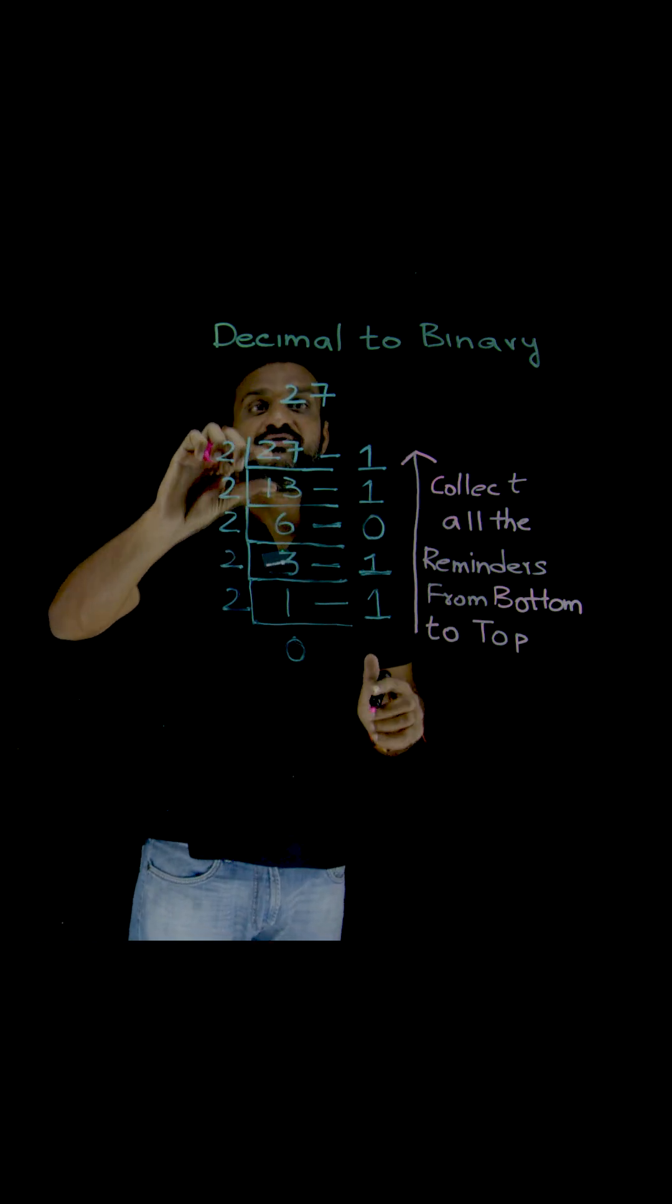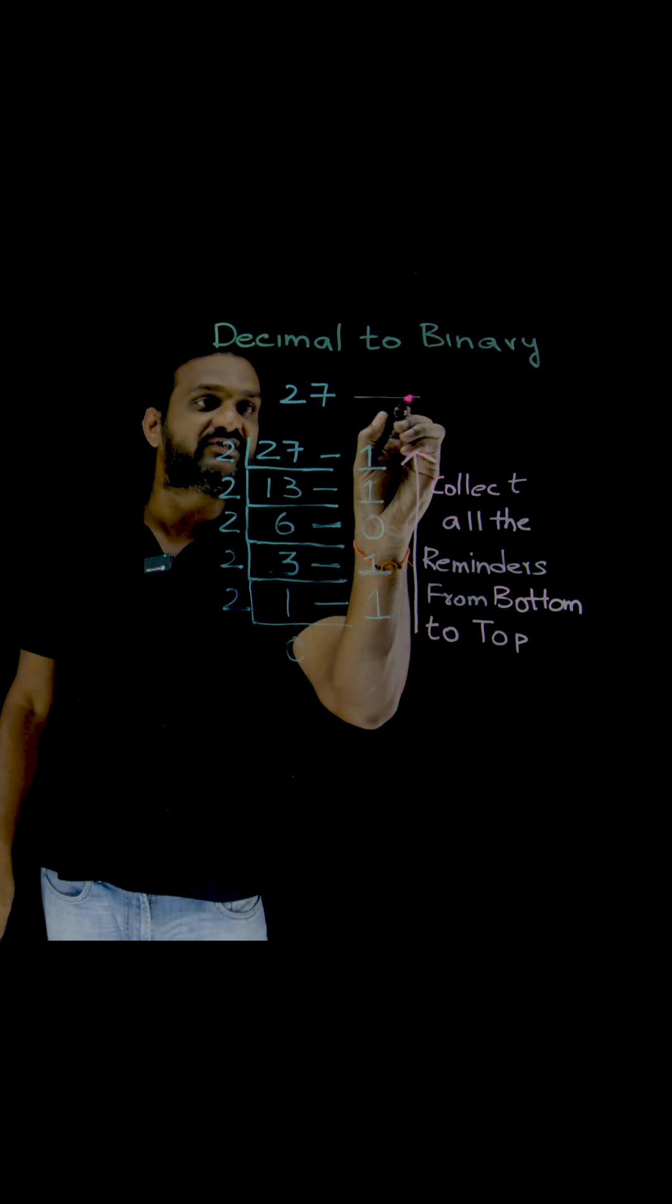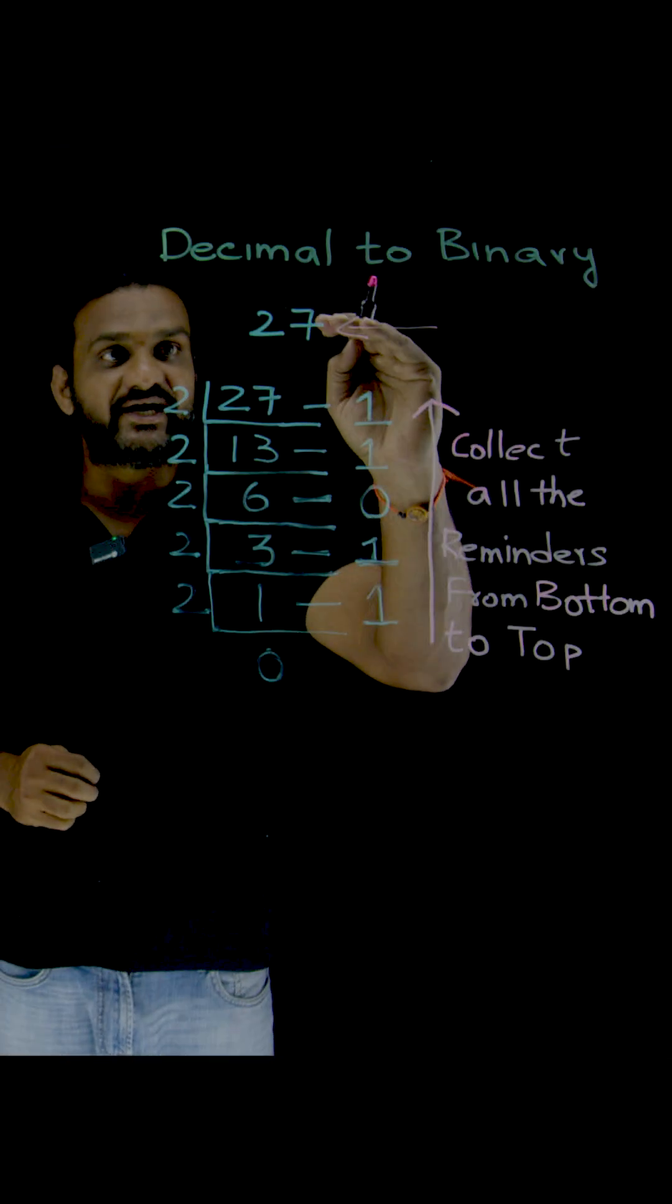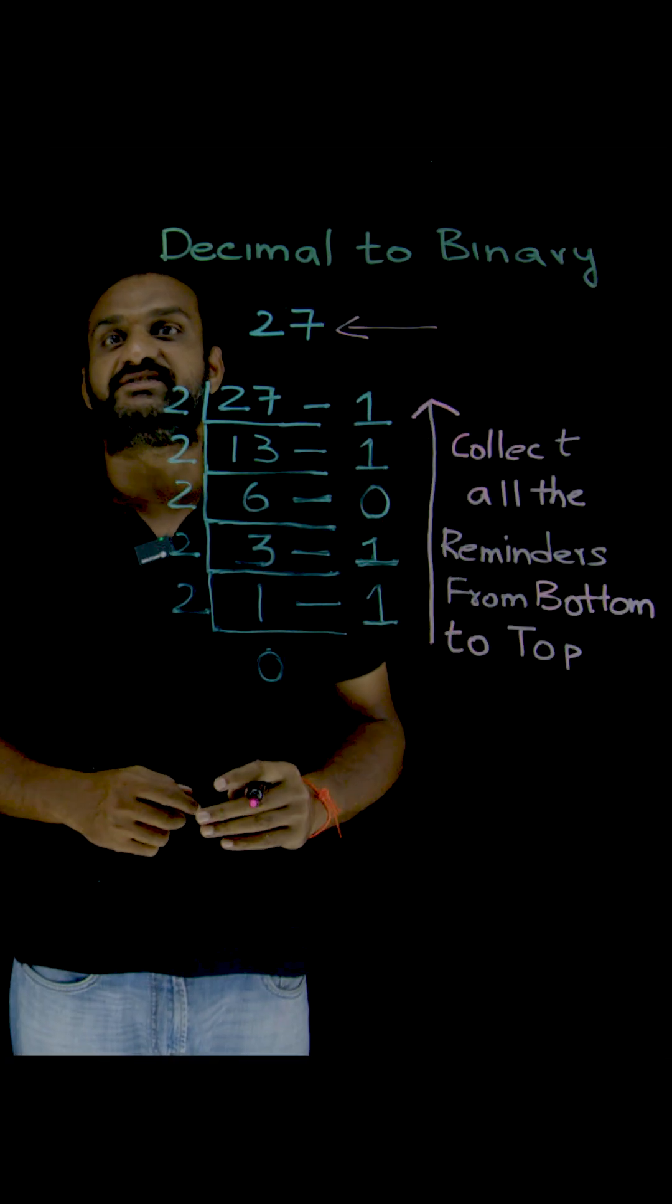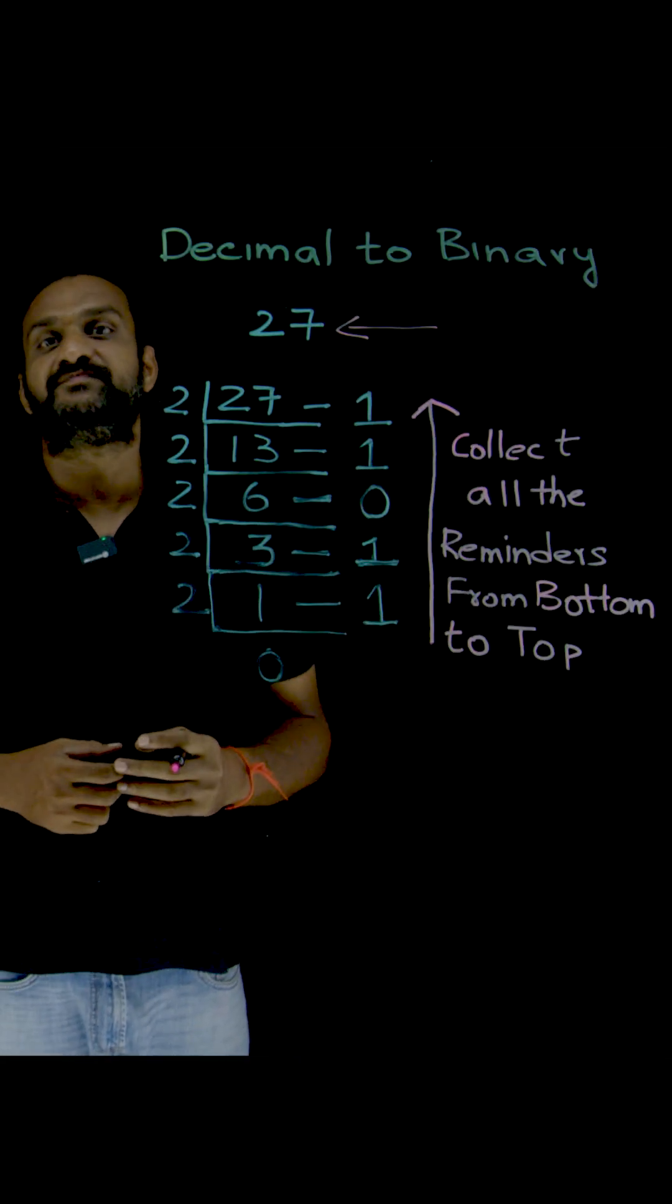Given a decimal number, how can we convert it? Here we are given the decimal number 27, so we have to get the equivalent binary number for this 27.